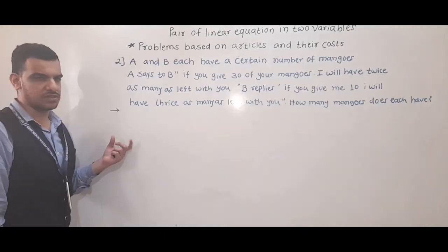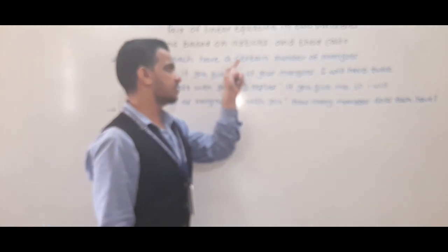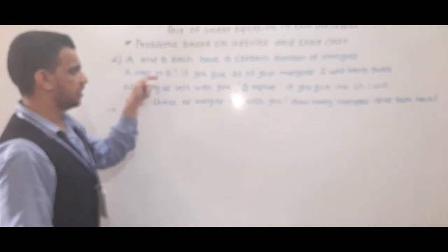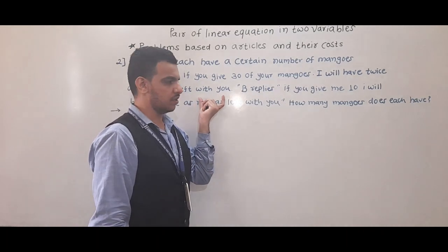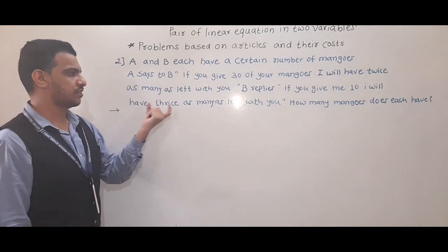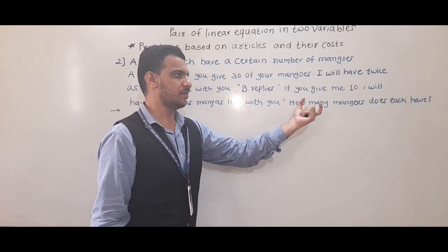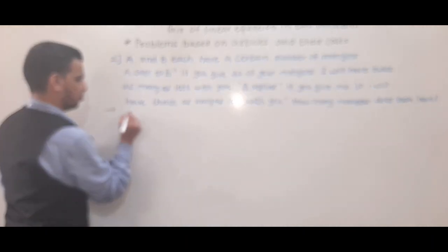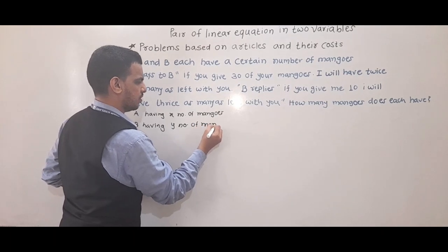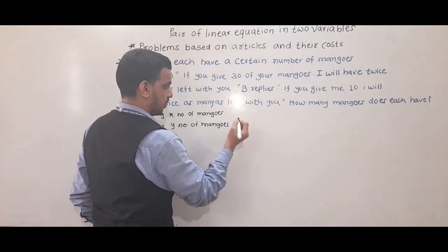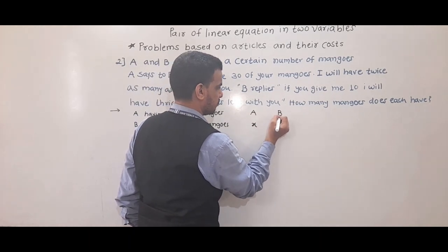The second example: A and B each have a certain number of mangoes. A says to B, if you give 30 of your mangoes, I will have twice as many as left with you. B replies, if you give me 10, I will have thrice as many as left with you. How many mangoes does each have? We suppose A has x mangoes and B has y mangoes.